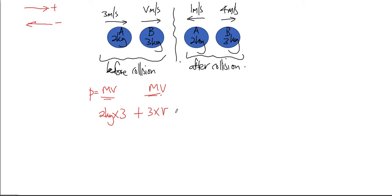This is equal to 2 kg multiplied by negative 1 meter per second, because it has changed direction.